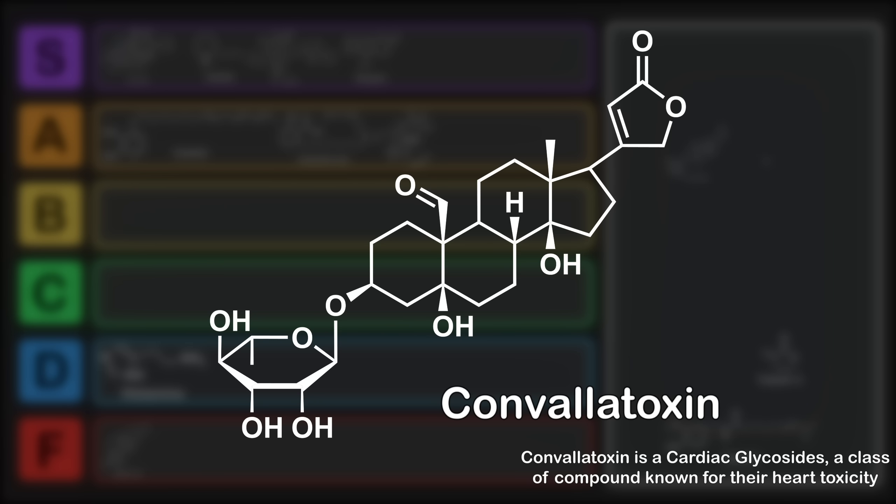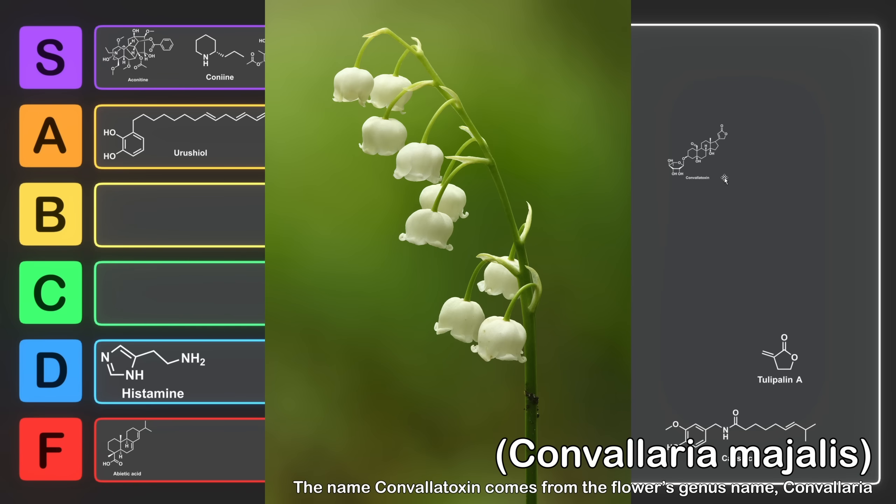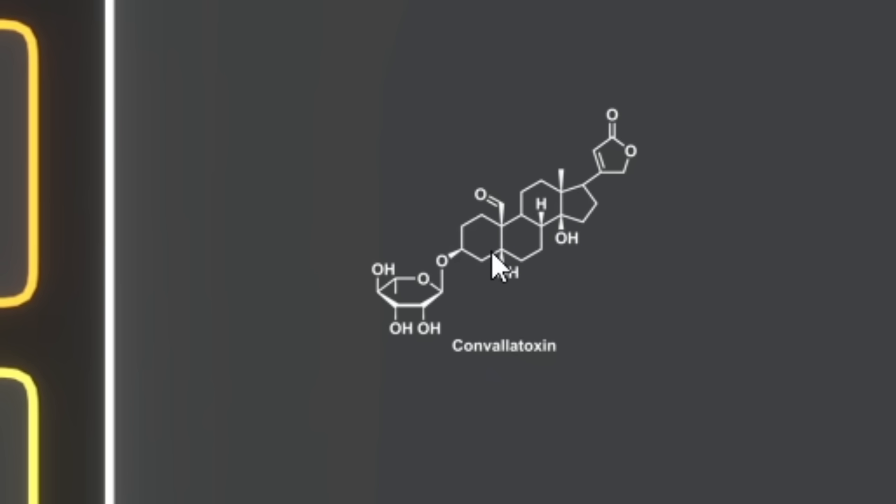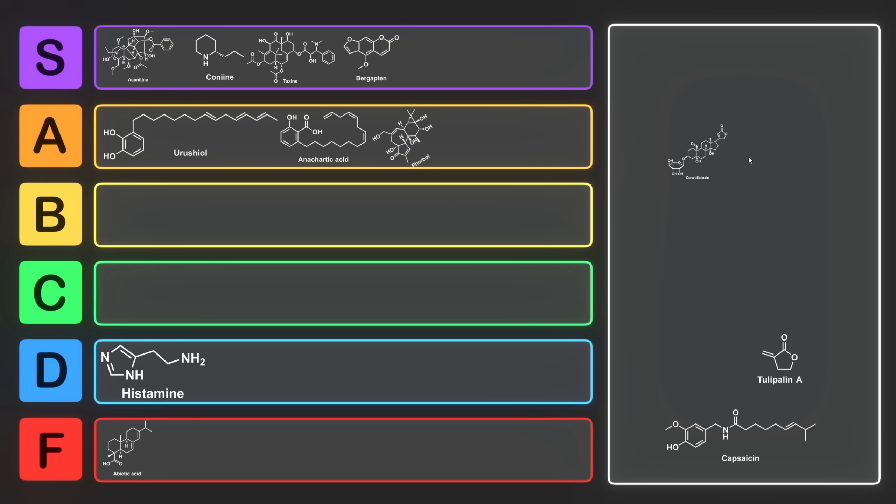Convallatoxin. Convallatoxin is the poisonous compound found in the lily of the valley. This has a steroid structure as well as five alcohol groups, an ether, an aldehyde, and what's known as a 2-furanone. Even though it has toxin in the name, the dose makes the poison, and convallatoxin actually has a number of interesting therapeutic applications. For example, in nanomolar doses, convallatoxin is used to treat heart arrhythmias and heart failure in patients.